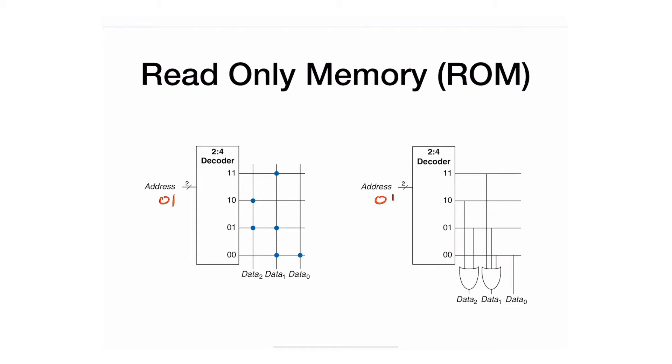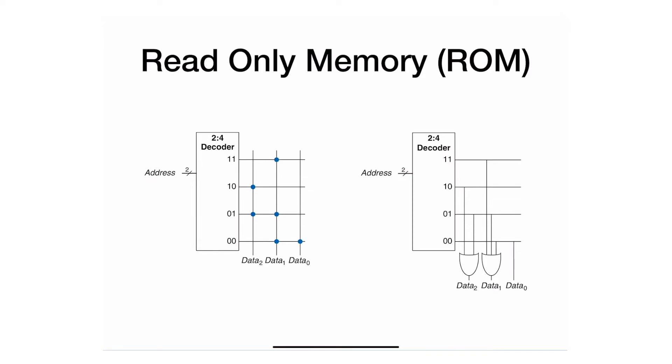I'll focus on data two. The two dots—this dot and this dot—are connected to the OR gate. For data two, let's assume this address is A and B. I have zero zero, one zero, then one zero, and one one. If you have zero zero, this OR gate doesn't get anything, so it gives me zero. So data two is not asserted.